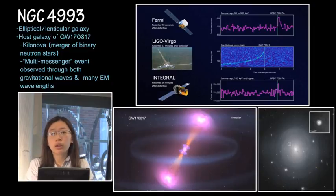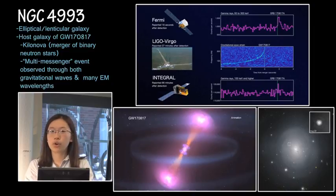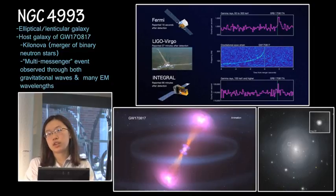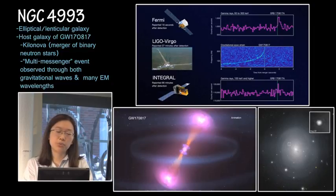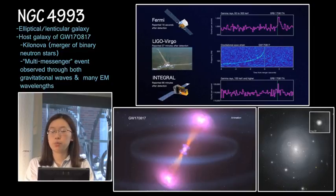Next we have NGC 4993, an elliptical or lenticular galaxy — fairly featureless, as you can see in the bottom right. This galaxy is particularly interesting because it was the host galaxy of gravitational wave signal GW170817, which occurred in August 2017. This gravitational wave signal came from a kilonova — a merger of binary neutron stars. What made this especially significant was that the event was detected both in gravitational waves and electromagnetic observations: initially as a gamma-ray burst, and then in optical, X-ray, and radio across pretty much every EM wavelength. This is what's called a multi-messenger event.